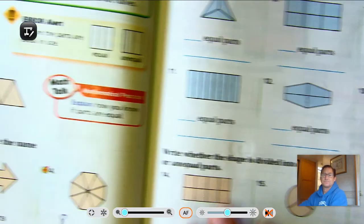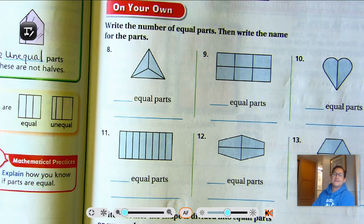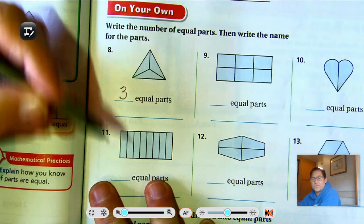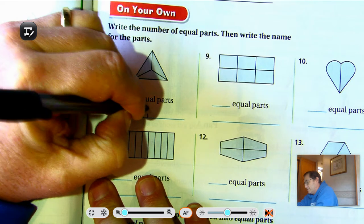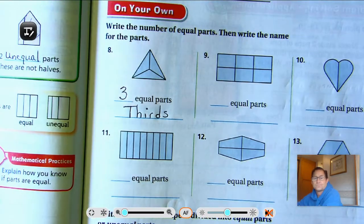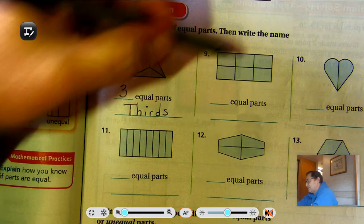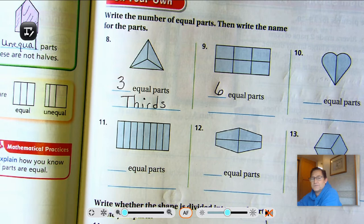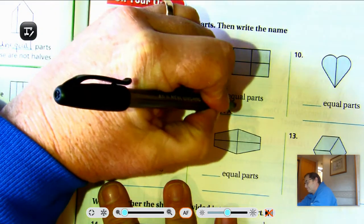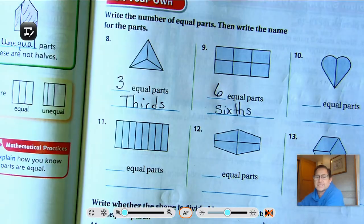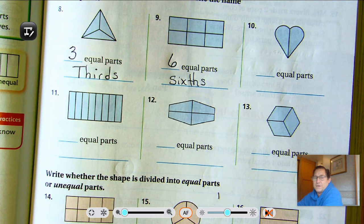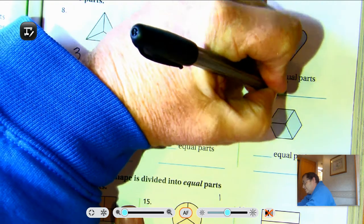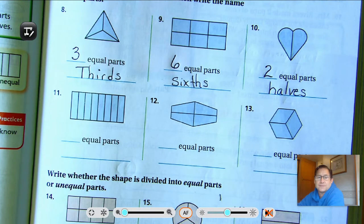Number eight, write the number of equal parts, then write the name for the parts. Well, I see three equal parts. And something with three equal parts, we call those thirds. In this next shape, I have three at the top, three on the bottom, so that's six equal parts. Six, and what's the name for something with six equal parts? Sixths. Number ten. Well, I see two parts to that. And so we call those halves. There's two halves.